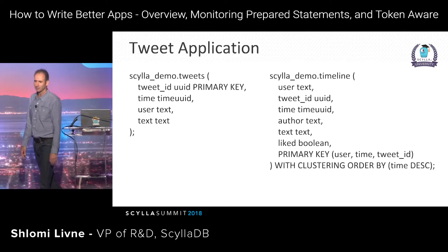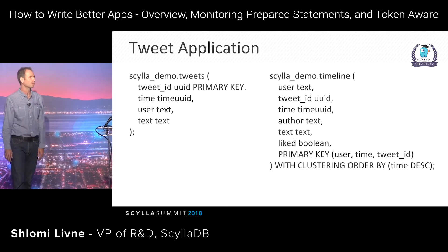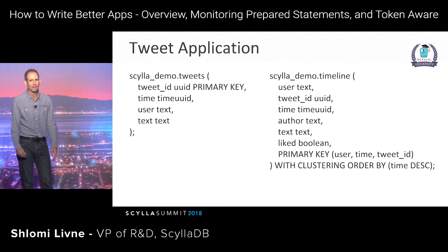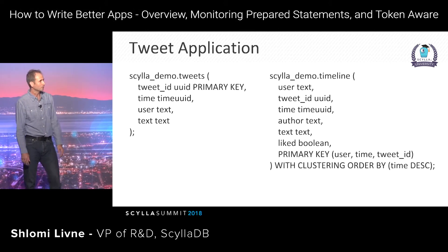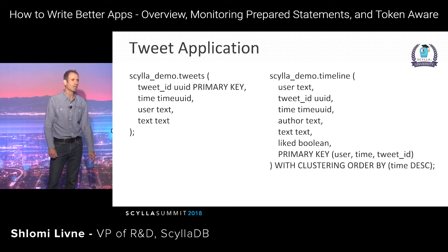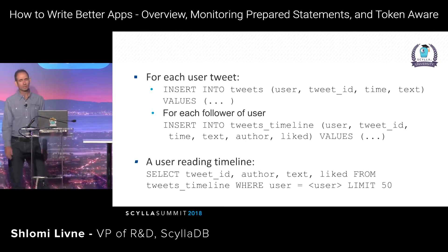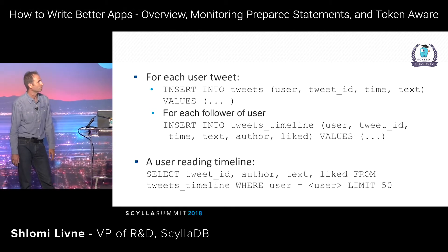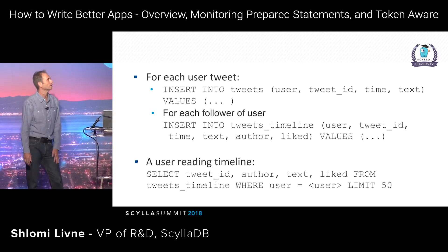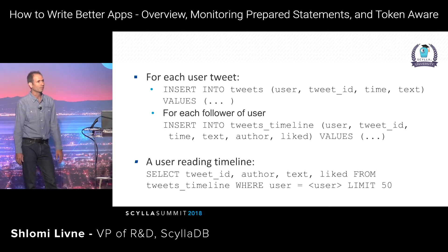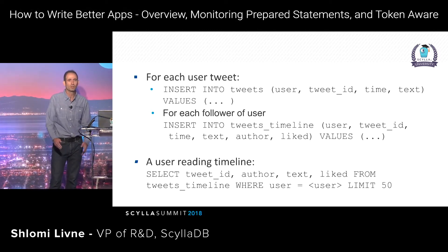The sample application is based on two tables. There is a tweets table in which we insert tweets, and there is a timeline table into which we insert information the user is interested in — so if I'm following a user, my timeline will have the tweets from that user. We added an additional field called 'liked' in which I can mark tweets I'm interested in. For each user tweet, we insert into the tweets table, and for each follower of a user, we insert into that follower's timeline. There is a single read query that reads from the timeline, returning only the last 50 events.